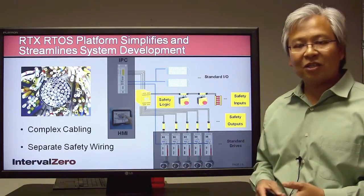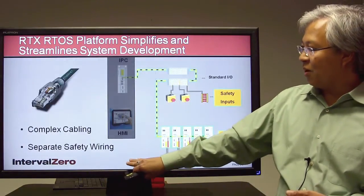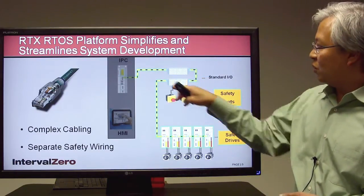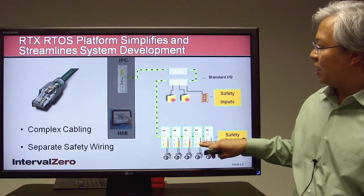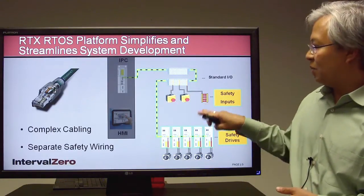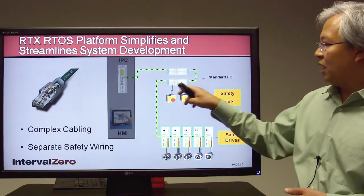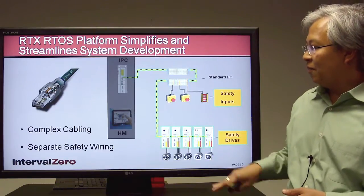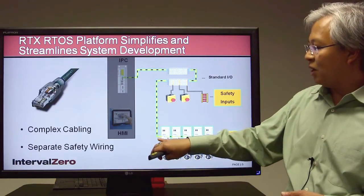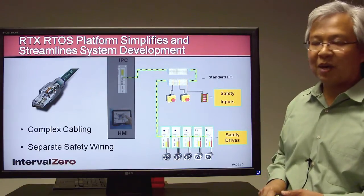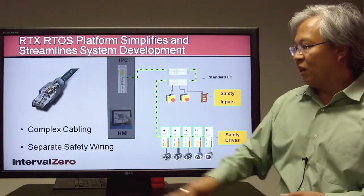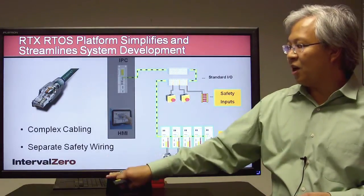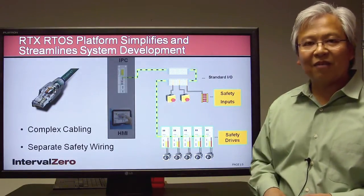When we apply the RTX RTOS platform, because we can make use of real-time Ethernet, we've had a huge impact on our design. We've gotten rid of all the complex wiring and all the separate safety wiring harnesses, and now we have a single Cat5 cable going to all of the IOs as well as all the drives. Real-time Ethernet not only takes advantage of standard Cat5, but it also integrates communication and safety on a single bus, essentially eliminating the need for separate safety wiring harnesses while still maintaining extremely high levels of safety. Huge savings in cabling costs as well as expandability and flexibility.